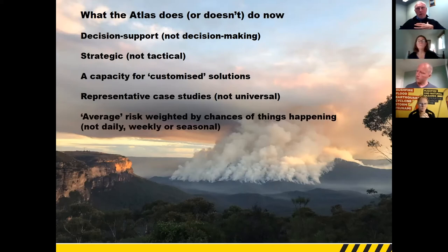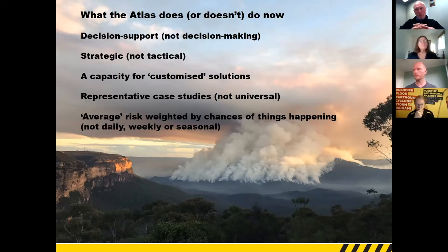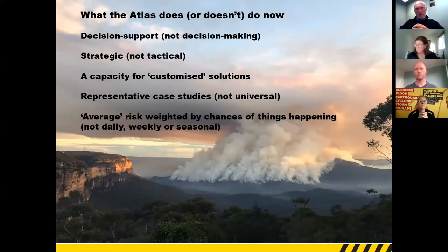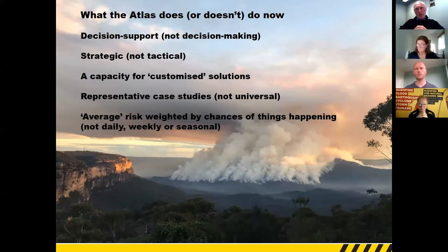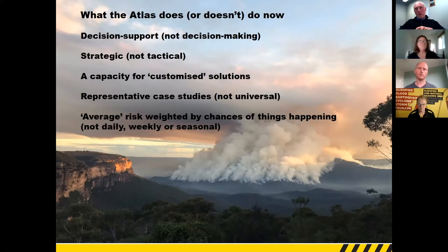The Atlas provides a view of risk and the response of risk to treatment that is long-term — roughly an average risk weighted by the chance of a whole bunch of things happening, calculated from a long-term perspective. For example, it takes into account the chances of different types of fire weather occurring based on local circumstances and ignition probabilities from extensive data analysis. It gives you a very long-term average view of risk, taking into account all the circumstances and probabilities that reflect each particular case study. It does not tell you what risk is tomorrow or next week or in any particular season.